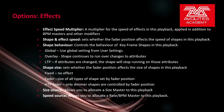Speed Effect Multiplier is a multiplier for the speed of effects on this playback, applied in addition to BPM masters and other modifiers. Shape and Effect Speed sets whether the fader position affects the speed of shapes in this playback. Shape Behavior controls the behavior of keyframe shapes in this playback. Global uses the global setting from user settings. Overlay means the shape continues to run over changes to attributes. LTP means if attributes are changed, the shape will stop running on those attributes. Shape Size sets whether the fader position affects the size of shapes - Fixed has no effect, Fader sets the size of all shape types by fader position, and HTP Fader means only dimmer shapes are controlled by fader position. Size Source allows you to allocate a size master, and Speed Source allows you to allocate a rate and BPM master to this playback.